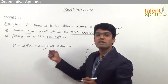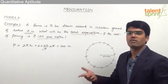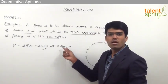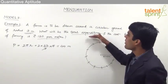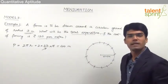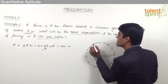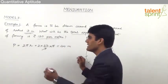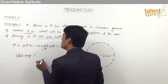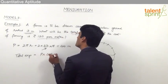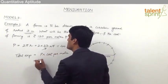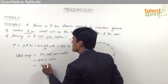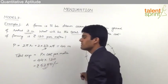Remember, perimeter is a measurement of length and should always be expressed in meters or centimeters as the case may be. Since the radius is in meters, the perimeter is also in meters — 44 meters. The question asks for the total expenditure when the cost of fencing is rupees 120 per meter. Total cost = perimeter × cost per meter = 44 × 120 = rupees 5,280.